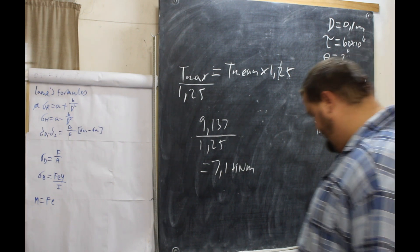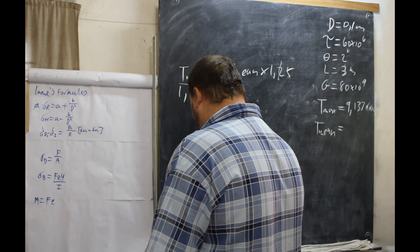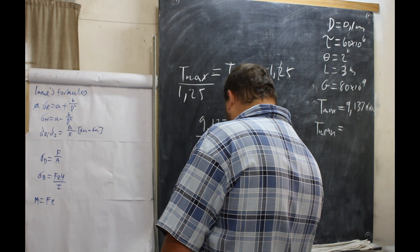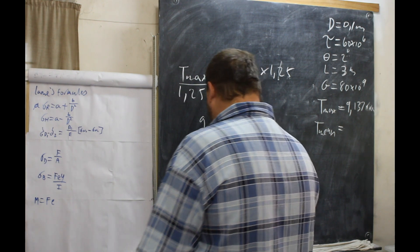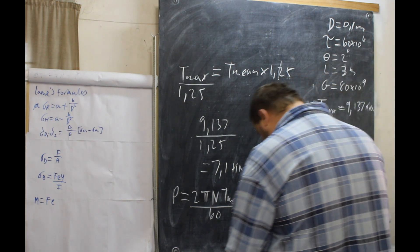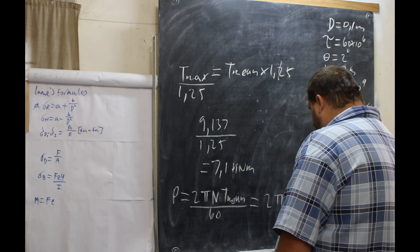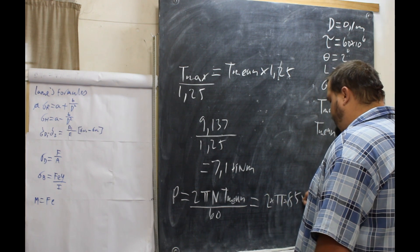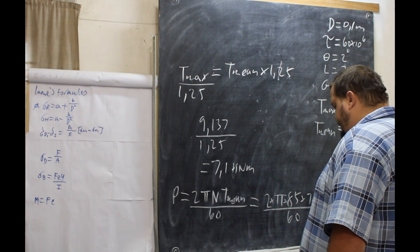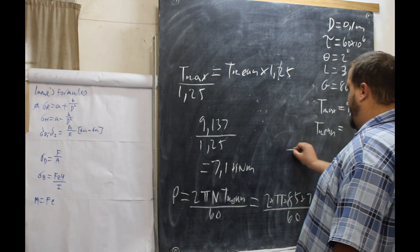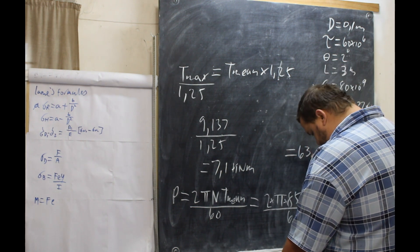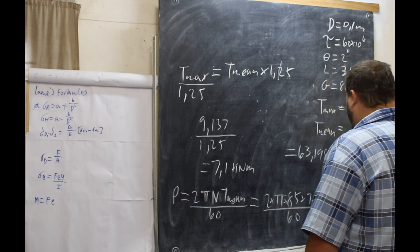Now we put T mean into the power formula. Power equals 2 pi times n times T mean, all over 60. So: 2 pi times 85 times 7.1 × 10³, all over 60. Our power is 63,198 kilowatts. And that is our final answer.